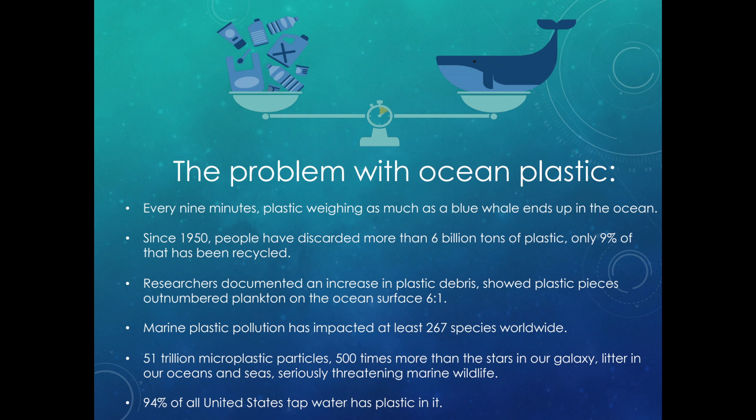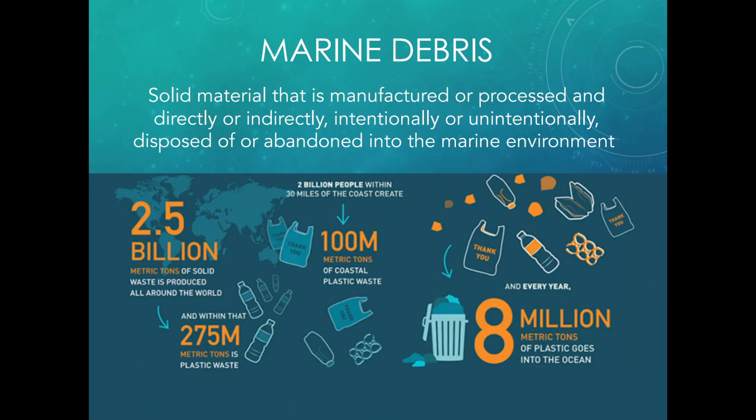There are 51 trillion micro-plastic particles in the ocean — 500 times more than the stars in our galaxy. So there are more pieces of plastic in the ocean than stars in our galaxy. Also, 94% of all United States tap water has plastic components in it, whether micro-plastics or chemicals. That doesn't mean never use tap water, because even if you buy a plastic water bottle you're getting chemicals from inside plastic anyway. I also judged a science fair where a student found a significant amount of micro-plastics in several brands of table salt — plastic is everywhere.